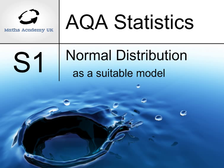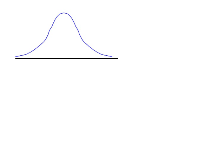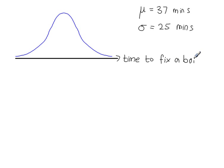The normal probability distribution as a suitable model. Let's say that the mean time taken to repair a central heating boiler is 37 minutes, and the standard deviation is 25 minutes. It's claimed that a normal distribution could be used to model the time taken to fix a boiler.